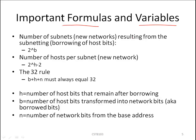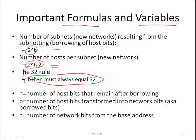When subnetting, there are important formulas and variables to remember. The formula 2 to the power of b gives the number of subnets, where b is the number of borrowed bits. After subnetting, we are left with host bits, so 2 to the h minus 2 gives the number of hosts per subnet. Finally, remember that 32 is the magic number: b plus h plus n must always equal 32. If you remember these three formulas, you will be able to subnet any network.